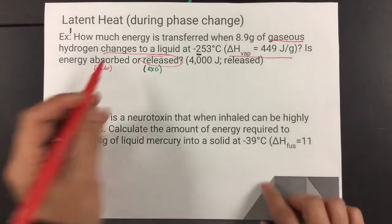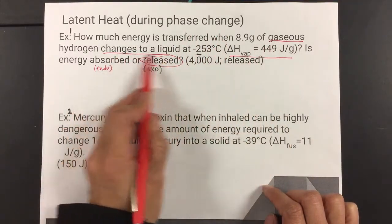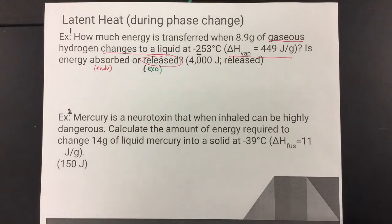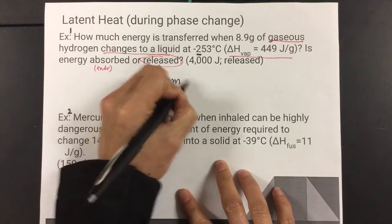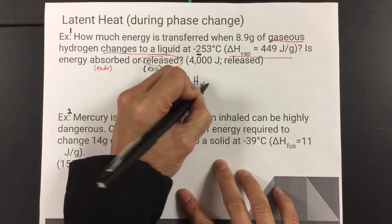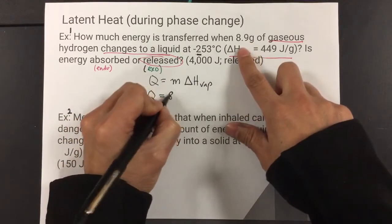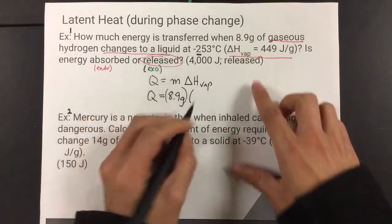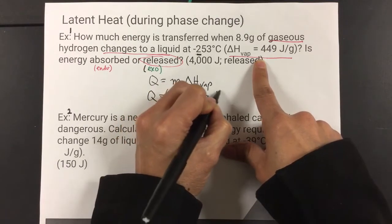Okay. So, again, this tells us it's a phase change because we see two phases, gas to liquid, and it tells it's changing. And then we see a ΔH vaporization value. So we're going to attack it just like that. So we're going to use Q equals mass times ΔH vape. So Q, these problems are really simple. You just take the mass, which is 8.9 grams. And I'm going to put the units in so that we can see how the units work out. So this is 449 joules per gram.